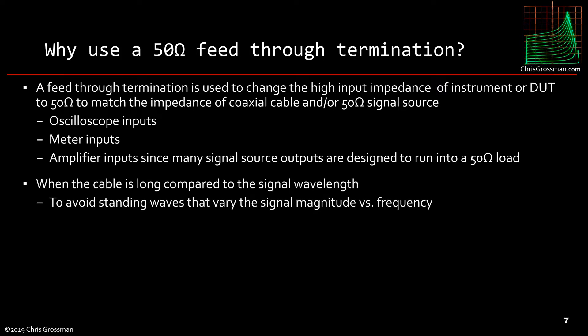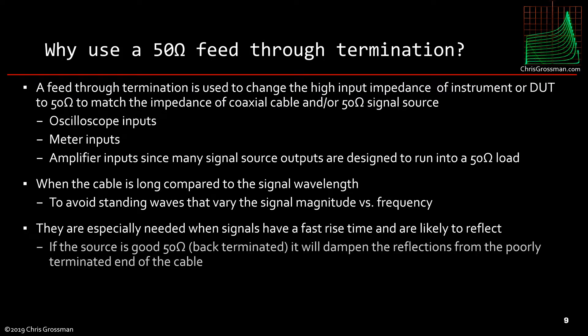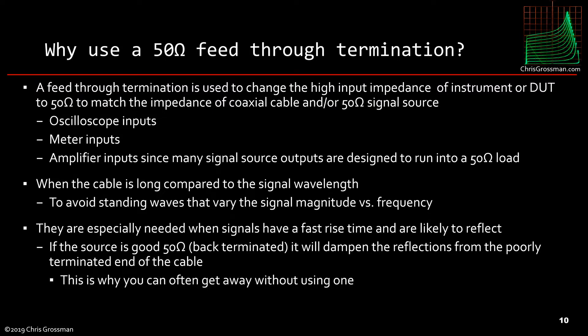When the cable is long compared to the signal wavelength, you want to avoid standing waves that may vary the signal magnitude versus frequency. They are especially needed when signals have a fast rise time and are likely to reflect. If the source is a good 50 ohms — this is called back terminated — it will dampen the reflections from the poorly terminated end of the cable, and this is why you can often get away without using a termination.